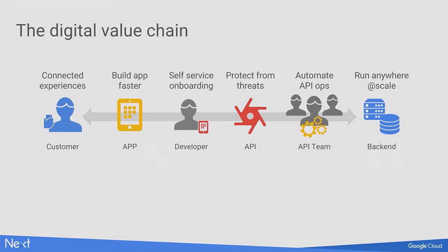We take a slightly opinionated view about APIs, and we start with what we call the digital value chain. It's a very simple concept. At the end of the day, all that matters is the entity to your left — the customer or the end user. It's all about delivering delightful and connected experiences and services to those end users through an app.